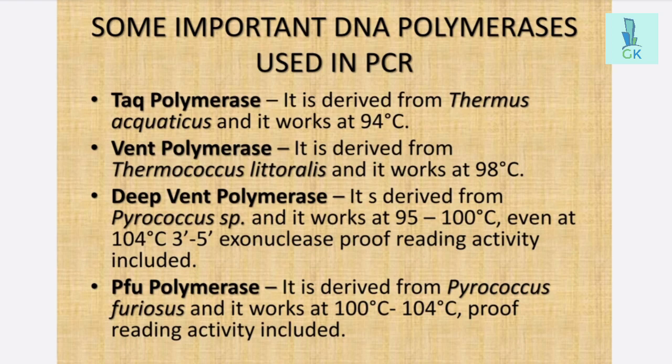VENT polymerase is derived from Thermococcus littoralis and it works at 98 degree centigrade. DIP-VENT polymerase is derived from Pyrococcus furiosus and it works at 95 to 100 degree centigrade, even at 104 degree centigrade. 3' to 5' exonuclease proofreading activity included. PFU polymerase is derived from Pyrococcus furiosus and it works at 100 to 104 degree centigrade, proofreading activity included.